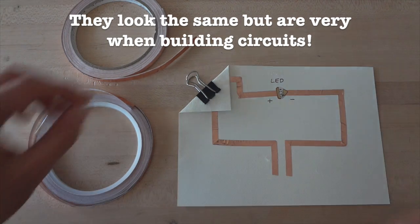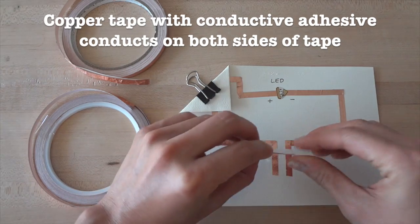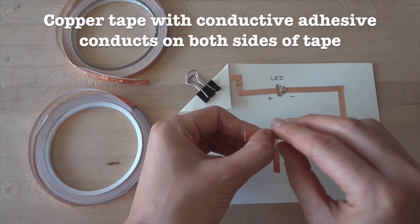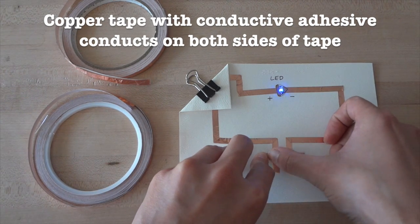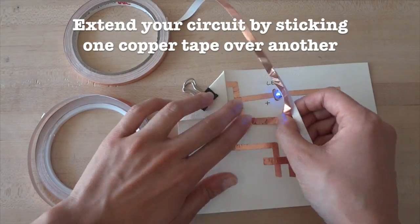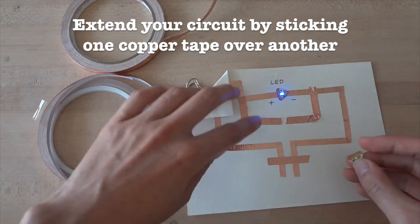They may look the same, but they function very differently when building circuits. With conductive adhesive tape, both the top side and the sticky bottom side of the tape will conduct electricity. That is, you can stick this tape over a gap in your circuit and electricity will flow through the adhesive and turn your circuit on. This means you can create new electrical connections and extend your circuit just by sticking down one tape over the other.